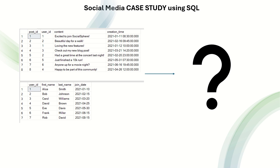Greetings everyone, welcome back to my channel Data Sculptor. Today we are going to solve a case study for social media data using SQL. We have two tables called posts and users. In the posts table you have columns: post ID, user ID, content, and creation time. Post ID is unique, and one user ID can have multiple posts. In the users table you have user ID, first name, last name, and join date.